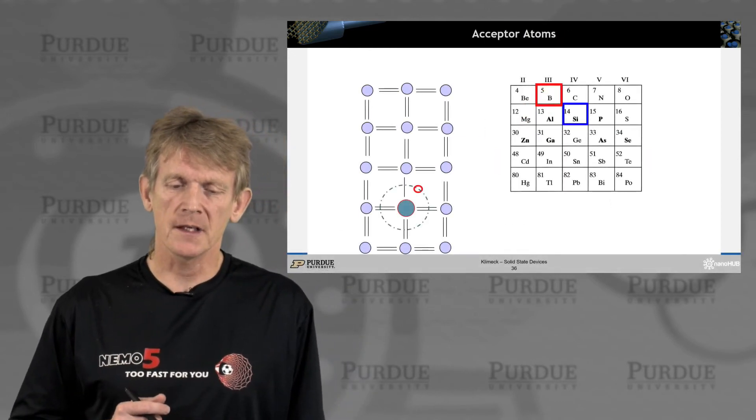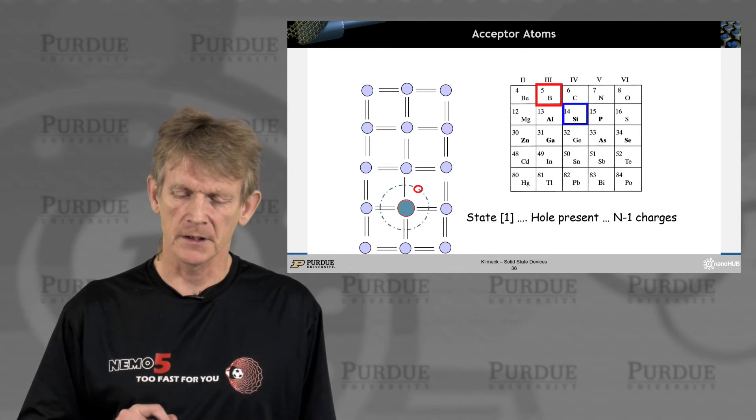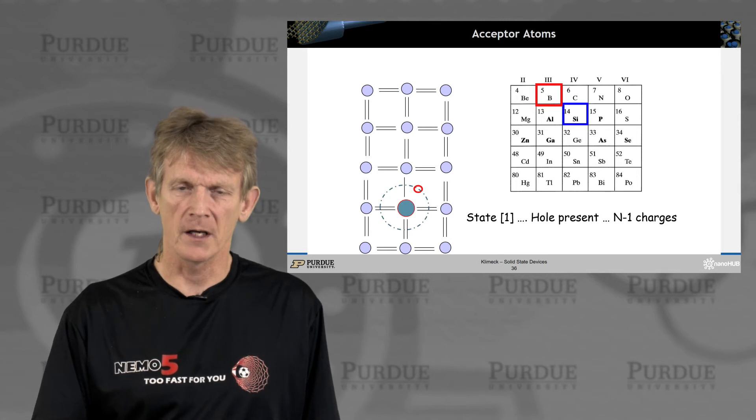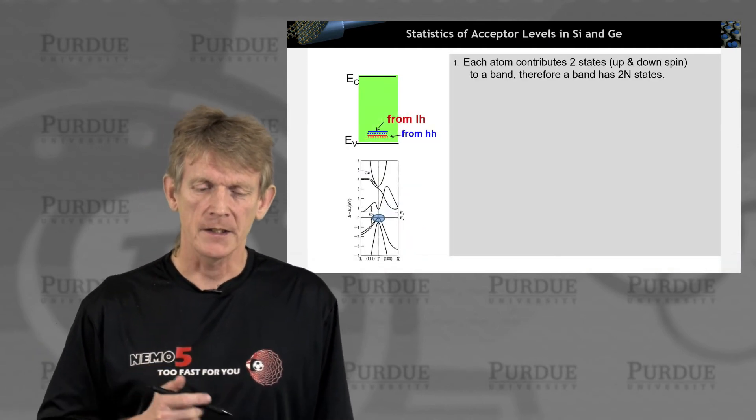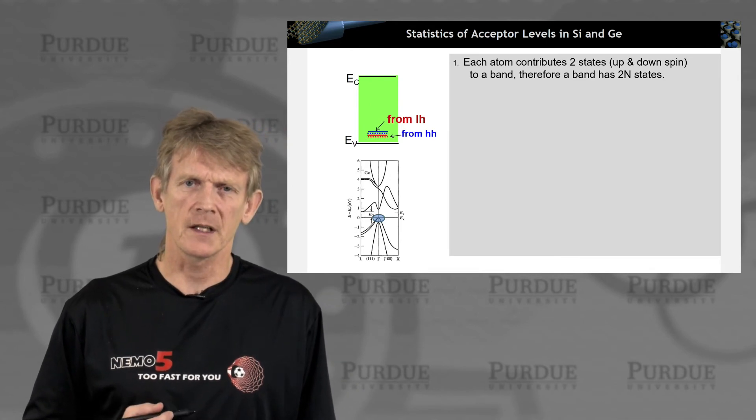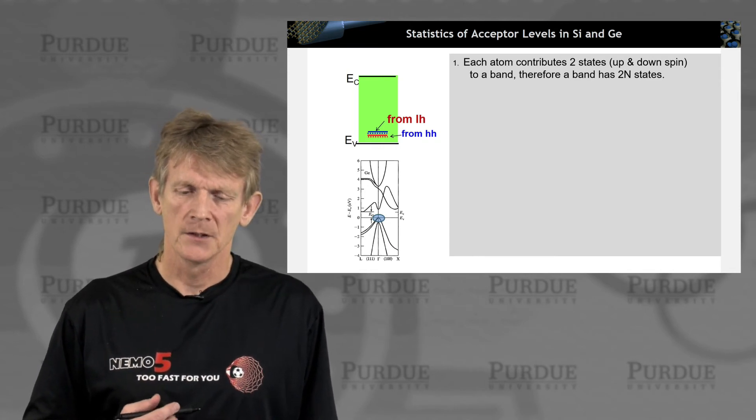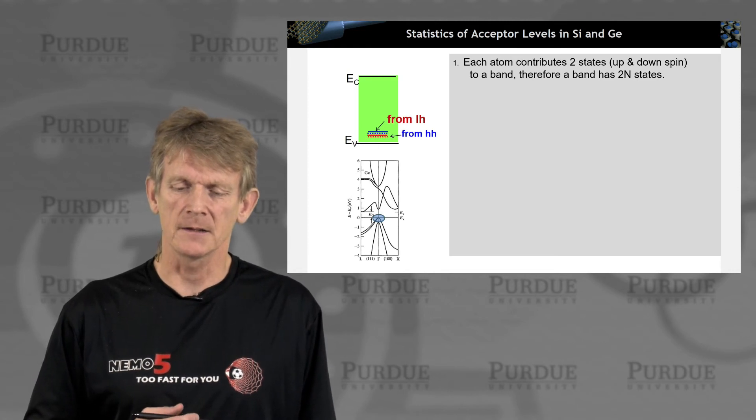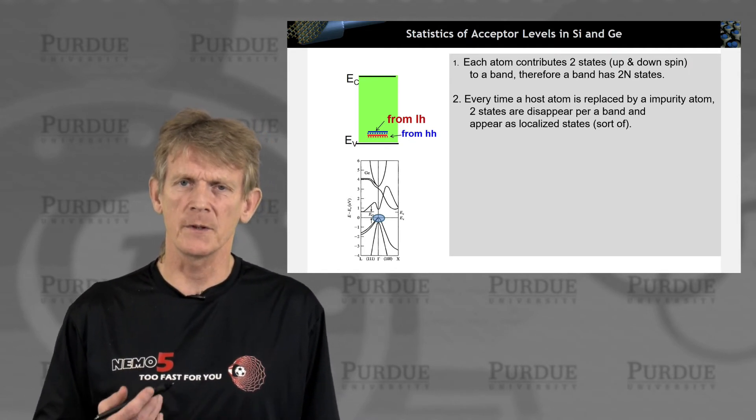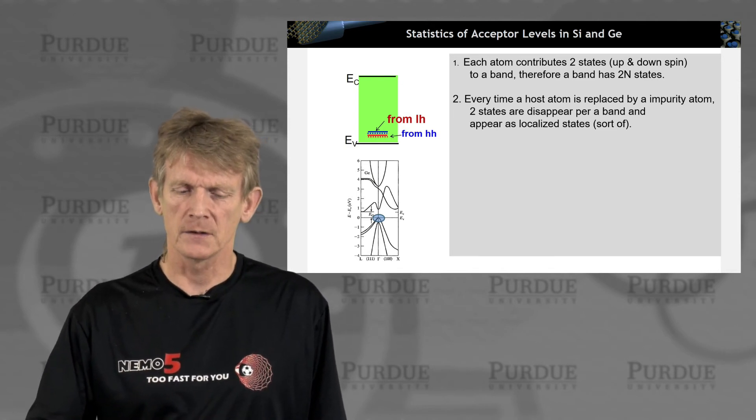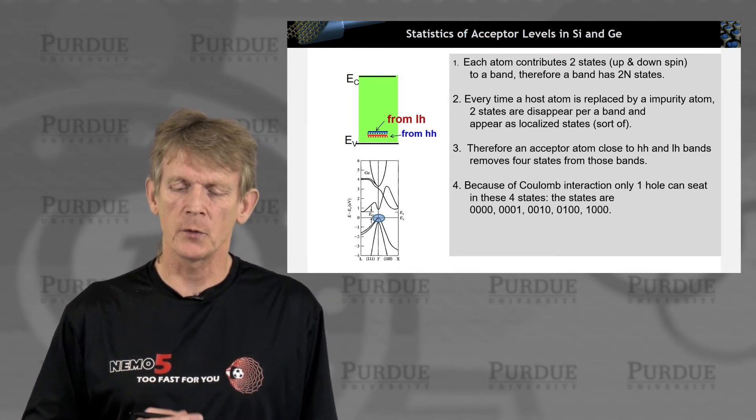So let's do the similar thing for acceptor atoms. There the case is slightly more complicated. So here we have boron in silicon. Let's assume that there is one hole present, and we have n minus 1 charges in the system, or the hole is filled, and we have capital N charges. These acceptor levels sit closer to the valence band edge, and as we discussed in the previous sections, there is a light hole and a heavy hole, and each atom contributes two states up and down spin to the band. So there we have two N states, and every time a host atom is replaced by an impurity atom, two states disappear, as we had just discussed, not just one for the electrons.